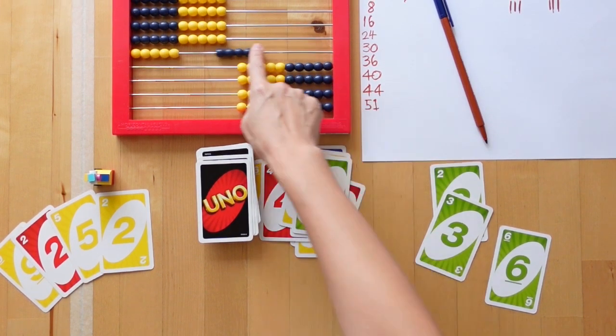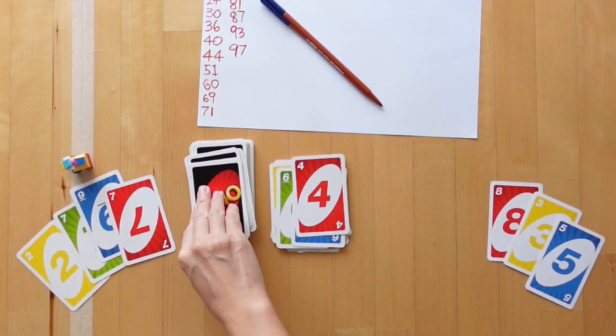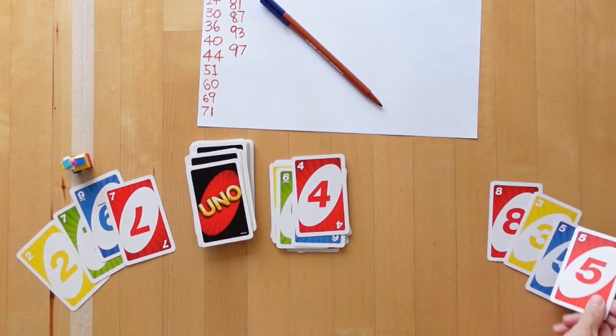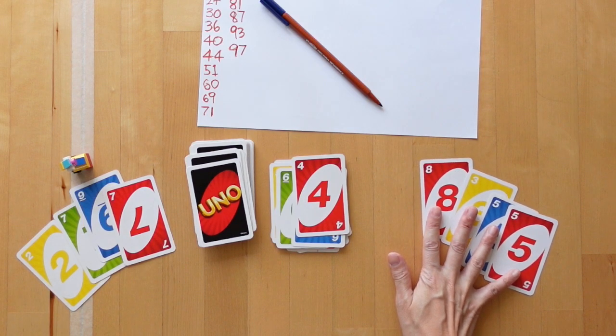Players then add that number to the previous Mount Olympus total. At the end of their turn, players draw their hand back up to four and play passes onto the next one.